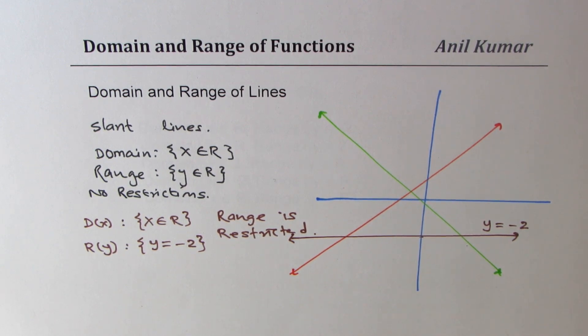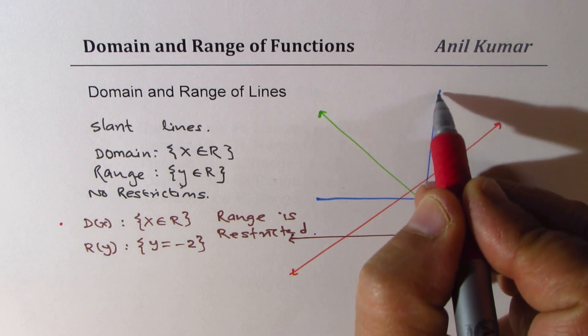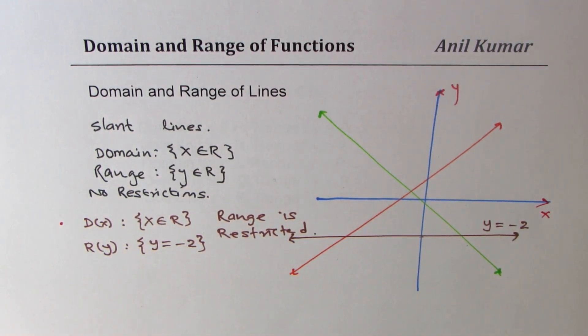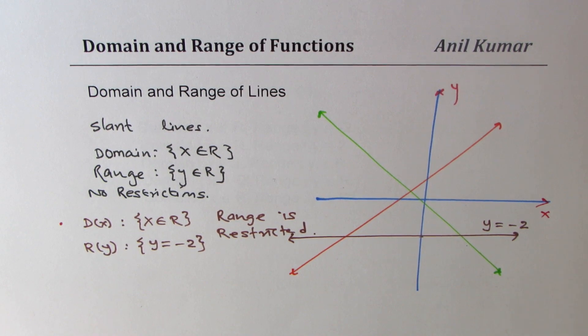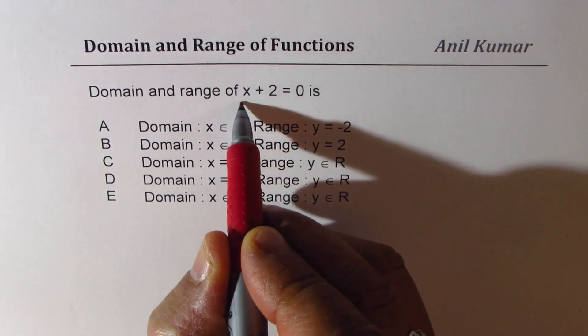Now the question is: can you have lines which have restricted domain? Think about it. Can you have lines which have restricted domain? Well, let me take an example. The example is domain and range for X plus 2 equals 0.